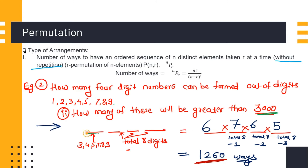If at the thousands place we have any digit other than 1 and 2 — that is 3, 4, 5, 7, 8, or 9 — we are sure that number will be greater than 3000. For the thousands place, 1 and 2 will not be considered; only the digits 3, 4, 5, 7, 8, 9 are available, giving 6 possibilities.